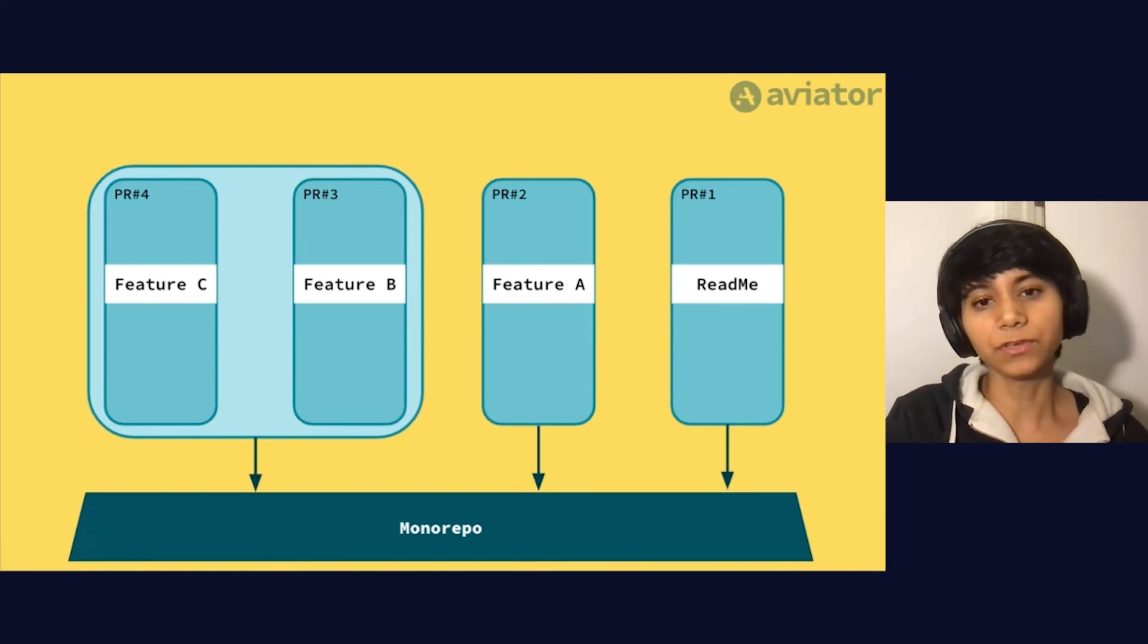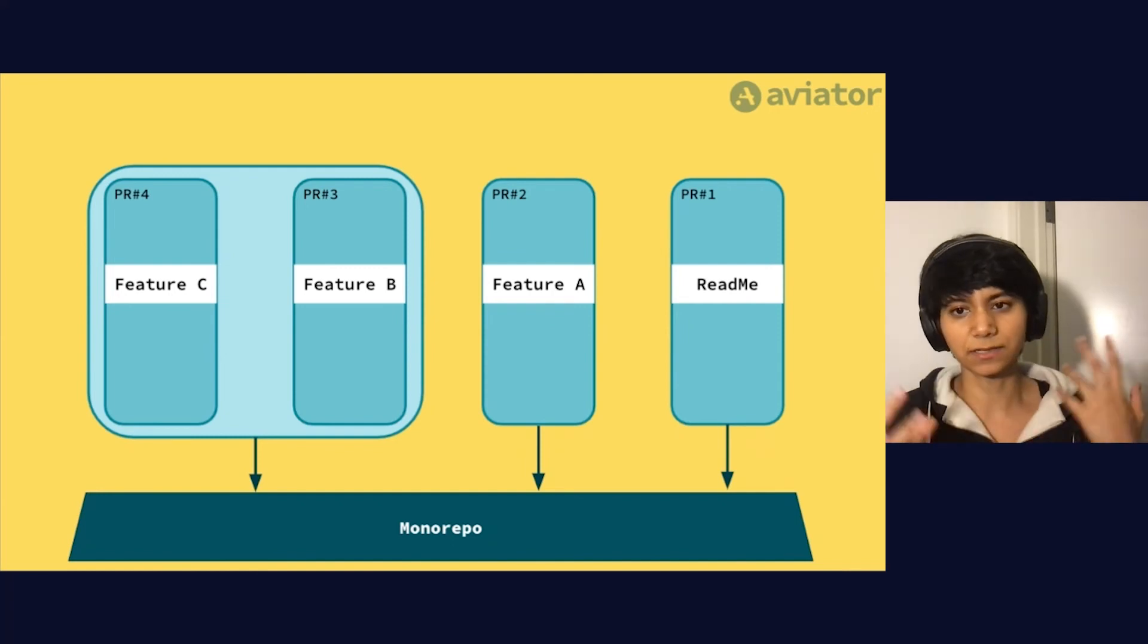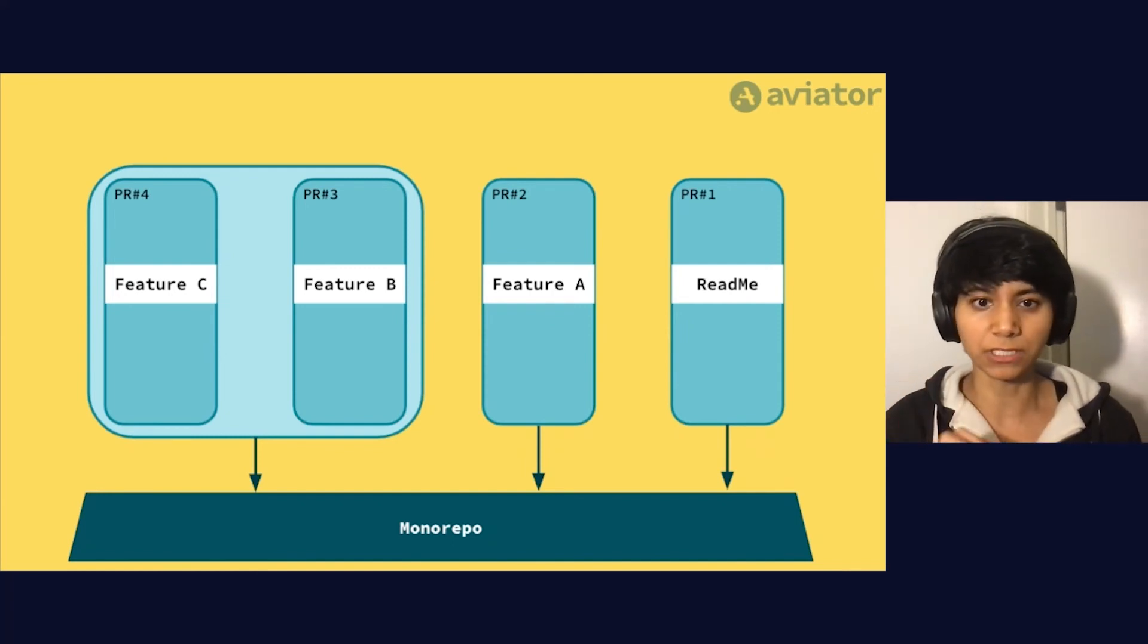In fact, if you use a build system like Bazel, it can give you that information that lets you very easily determine which PRs are independent and which PRs are dependent on each other.